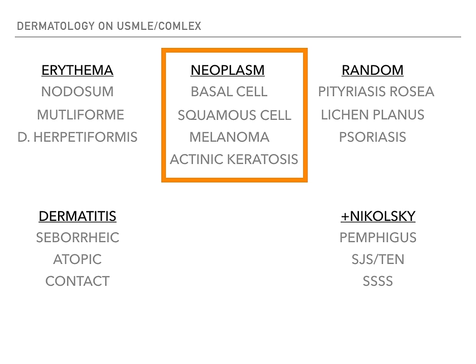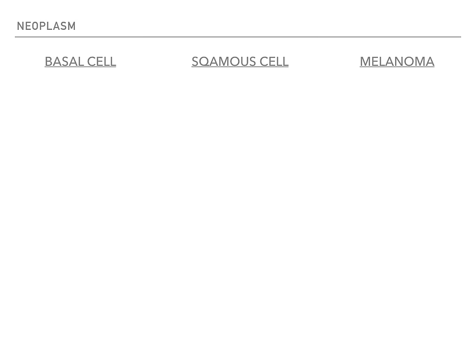Now let's move on to the neoplasm, aka cancerous category. We have basal cell, squamous cell, and melanoma. The rash is going to be in a sun-exposed area for all three, so that doesn't tell you anything. You have to get these questions right based on what the rash looks like and the buzzwords they give you.